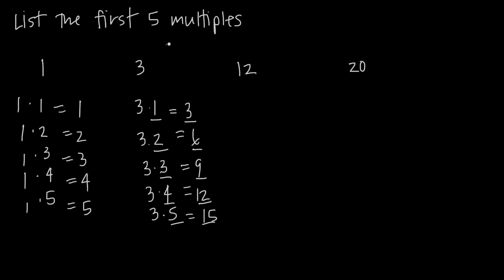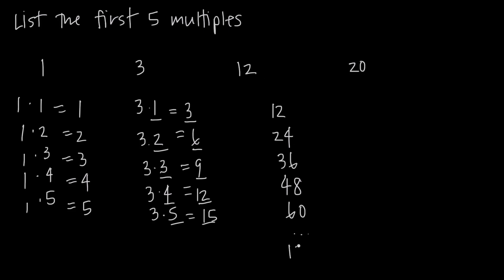So we're just looking for the multiples of that number. Same thing here — I can just say 12 times 1 is 12, 12 times 2 is 24, 12 times 3 is 36, 12 times 4 is 48, and 12 times 5 is 60. So all of these are multiples of the number 12, and I could keep going on to infinity. I could say 12 times 100 is 1200, and 1200 is a multiple of 12.